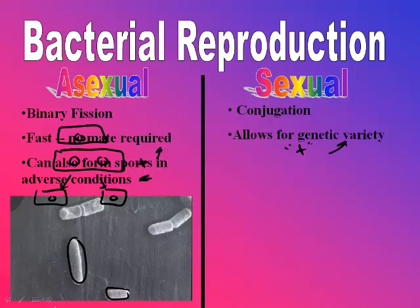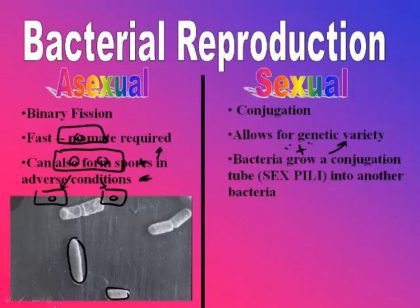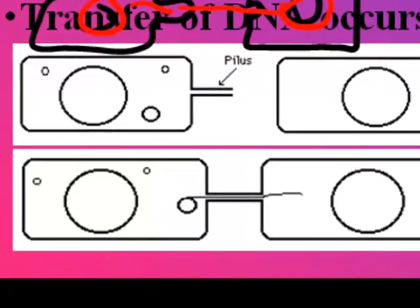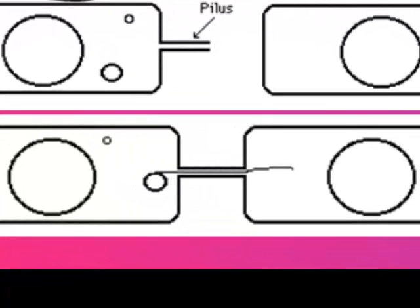So if one bacterium is antibiotic resistant to penicillin and it reproduces with another one, now they're both antibiotic resistant — very positive for them, pretty negative for us. This involves a plasmid, which is a little piece of DNA that gets transferred from one bacterium to the next.